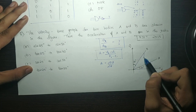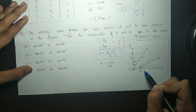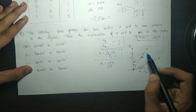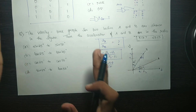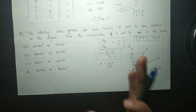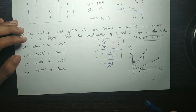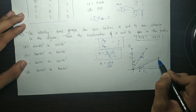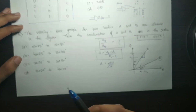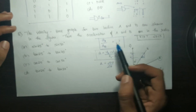Look at this equation. This gives V2, V1, T1, and T2. The slope is tan theta, where tan theta equals V2 minus V1 divided by T2 minus T1. So the slope of the VT graph is our acceleration. The acceleration of A and B are in the ratio of their slopes.